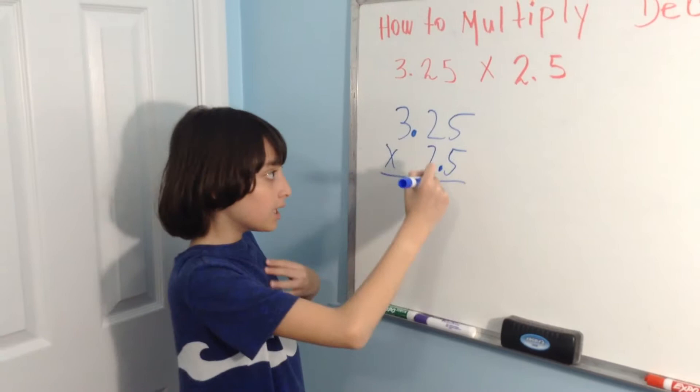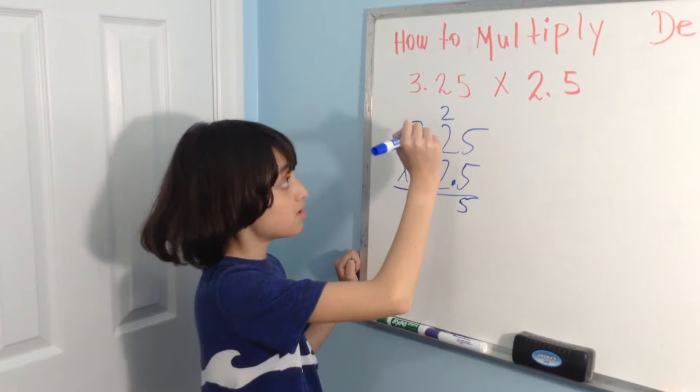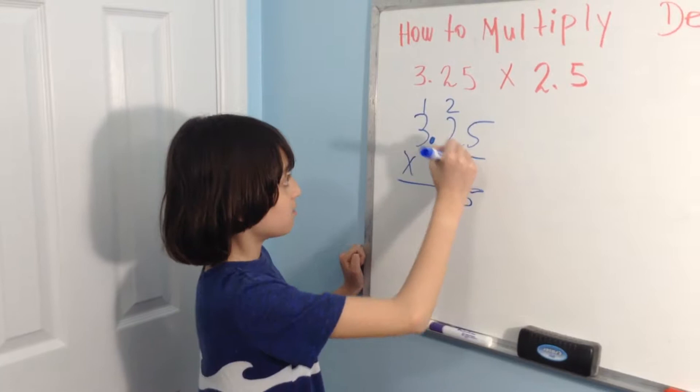And do the multiplication like you would normally. 5 times 5 is 25. 2 times 5 is 10, plus 2 is 12. 3 times 5 is 15, plus 1 is 16.